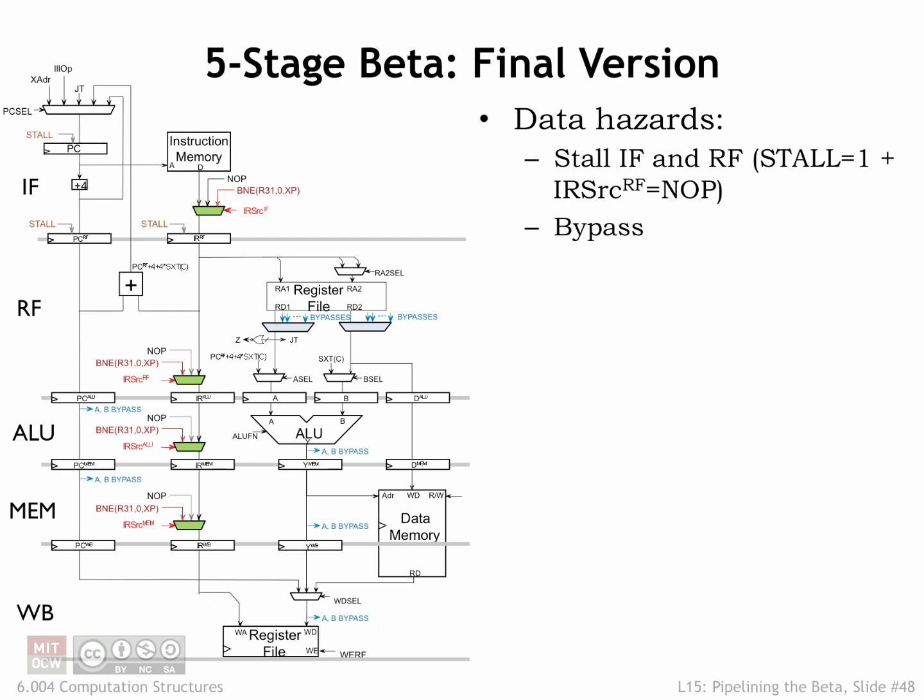so we can route values from later in the datapath if we need to access a register value that's been computed but not yet written to the register file. We also made a provision to insert NOOPs into the pipeline after the RF stage if the IF and RF stages are stalled.